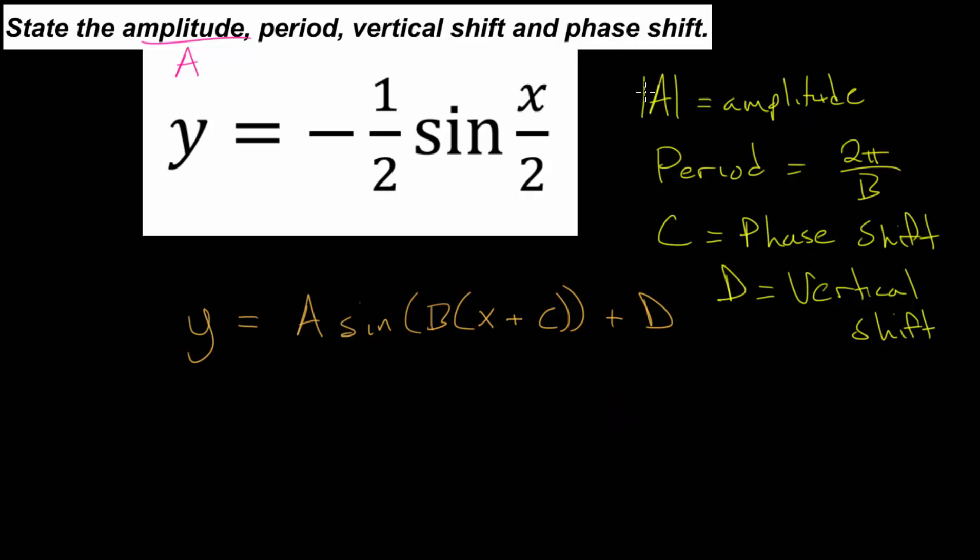So let's just compare what we have to this general equation. We can see that our a value for this given equation, the coefficient on the sinusoidal part, is this minus 1 half. But to find the amplitude, we're actually looking at the absolute value of a. So we'll make this positive. This will become positive 1 half. So our amplitude is 1 half.